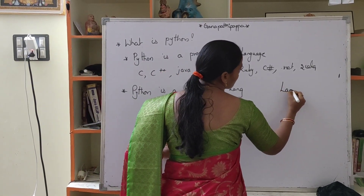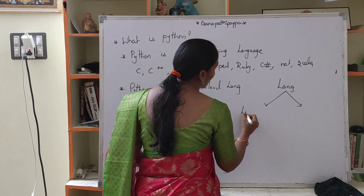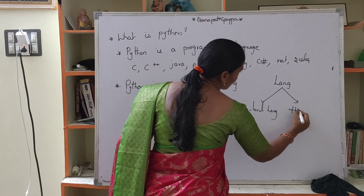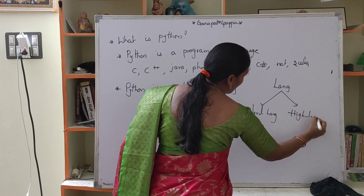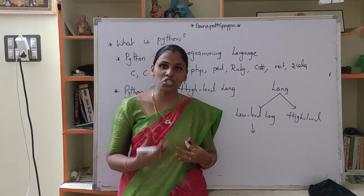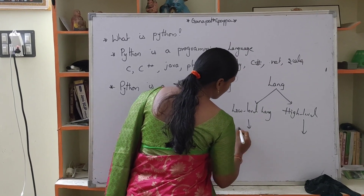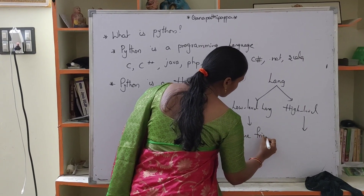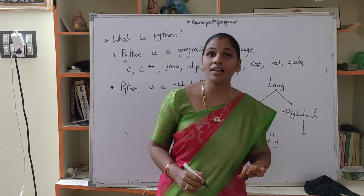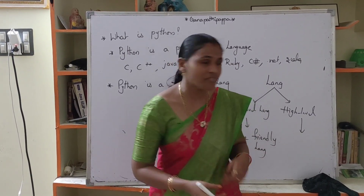Languages are divided into two types: low-level language and high-level language. Low-level means the machine can understand easily — that means it is a machine-friendly language. High-level means the programmer can understand easily — that means it is a programmer-friendly language.